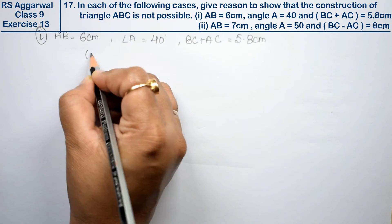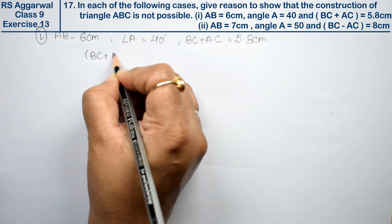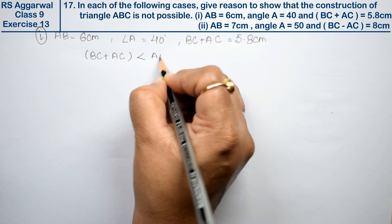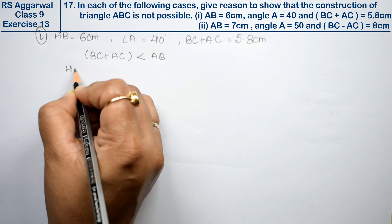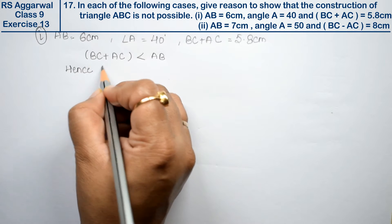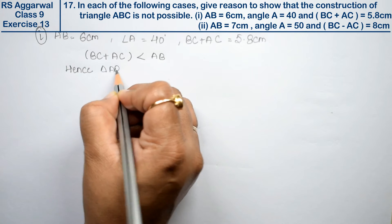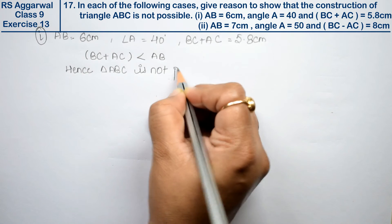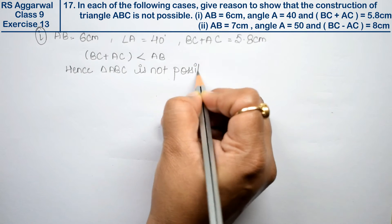Now BC plus AC is less than AB. So hence triangle ABC is not possible.